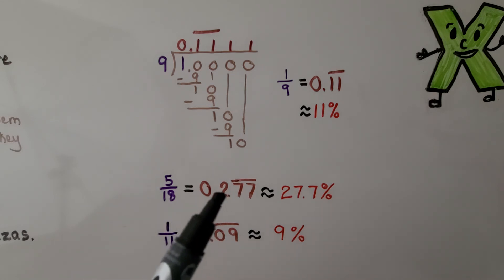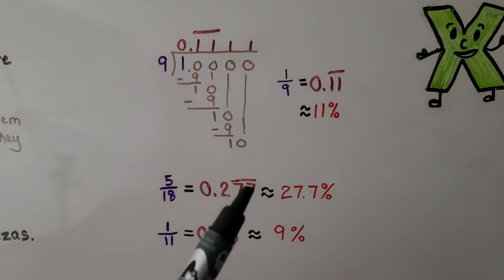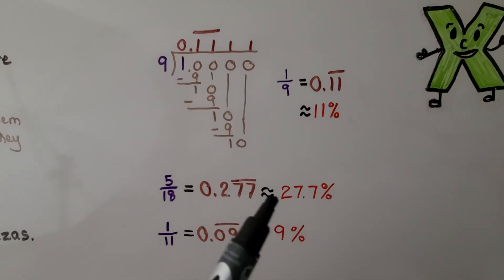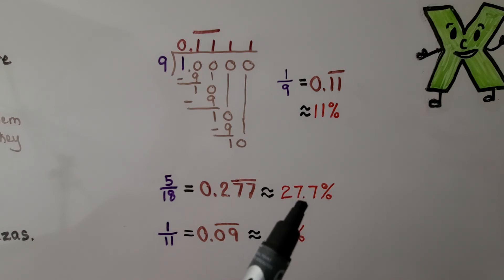For five-eighteenths, we have a 0.2, but then the sevens repeat. So we only have the bar over the sevens because those are the digits that are repeating. We can say it's approximately 27.7 percent.